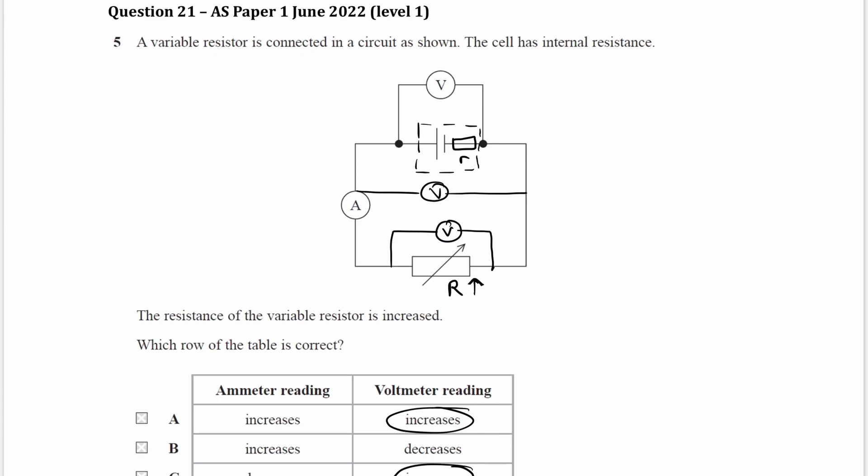And if the external resistor's resistance has gone up, that means the total resistance goes up, because the total resistance is equal to the resistance of the variable resistor plus that of the internal resistance. Total resistance goes up, and if that's the case, if we consider V equals IR...